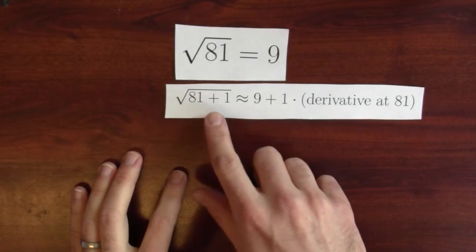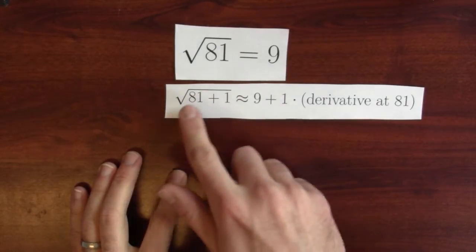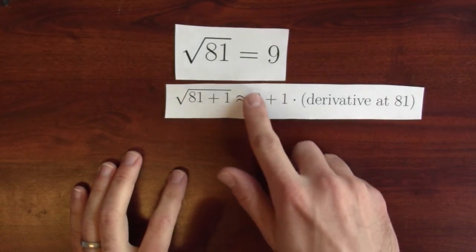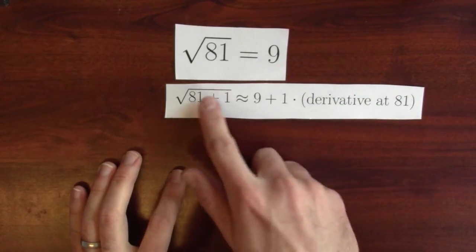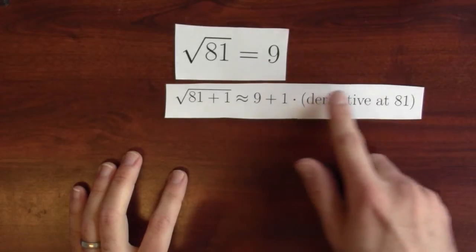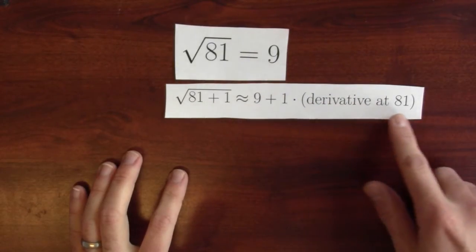I'm trying to wiggle the input up a little bit. Well, derivative is something to say about that. The square root of 81 plus 1, the square root of 82 would be about the square root of 81, which is 9, plus how much I expect the output to change. Well, the derivative is measuring how much I expect the output to change by.